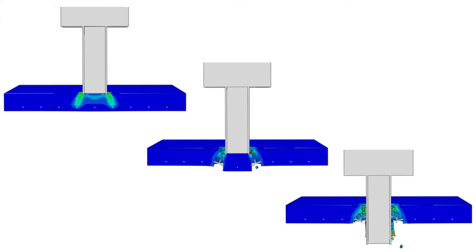In this computer simulation a steel beam hits a concrete slab which is reinforced by using steel bars, and it takes only milliseconds for the beam to break the slab, if the velocity is high enough.